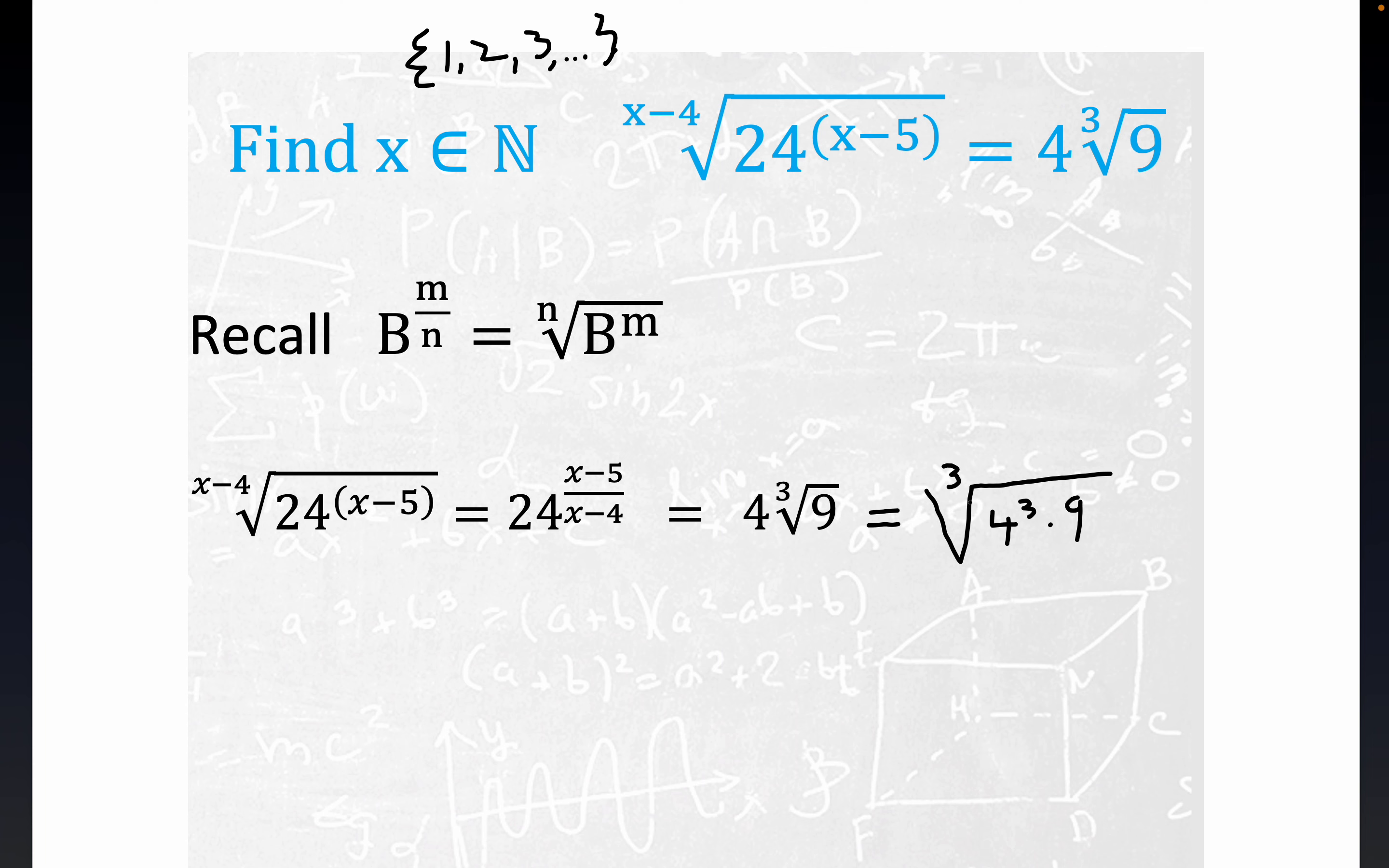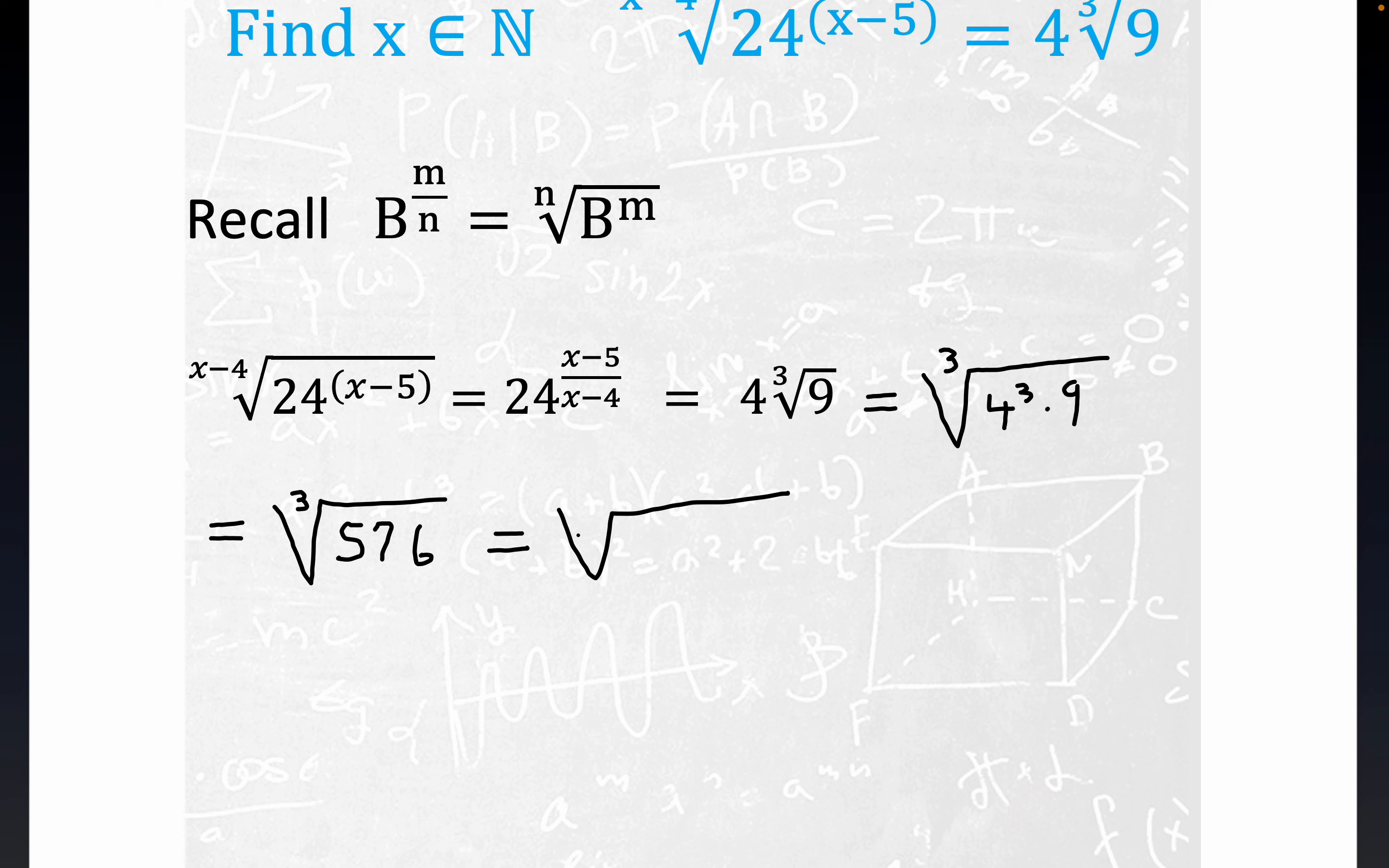Cubing and cube rooting are inverse operations. Now if you continue right here folks, this is 64 times nine which is 576. So I'll skip that arithmetic step here. We'll end up with equals to the cube root of 576. But a lot of you will probably recognize 576 as a perfect square. It's equal to 24 squared, which is very good news. This is equal to the cube root of 24 squared.